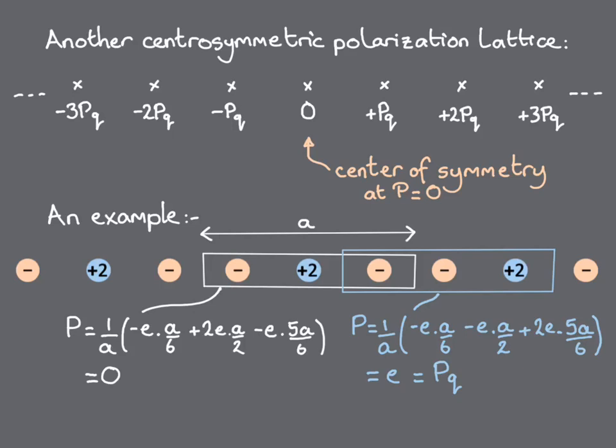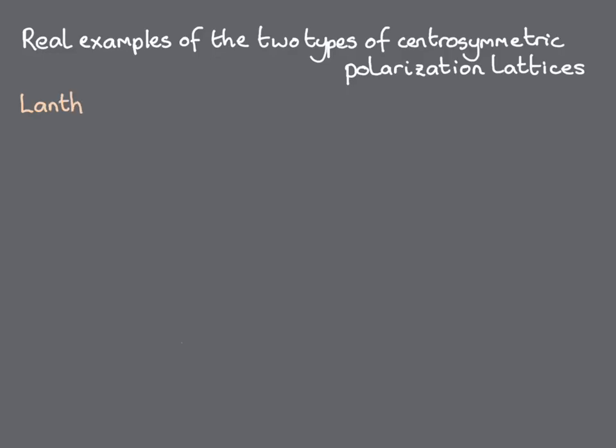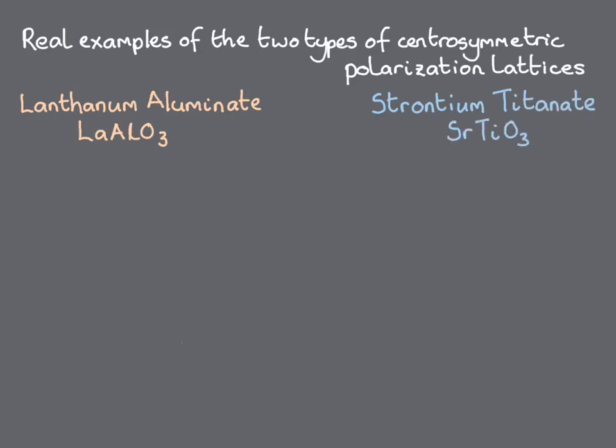Interestingly, if we make a connection between these two crystal lattices, there has to be a change in the polarization value at the point where they join, even though both lattices are nonpolar. Now let's take a look at examples of real materials that have these two different types of centrosymmetric polarization lattices. We'll choose the examples of lanthanum aluminate and strontium titanate.